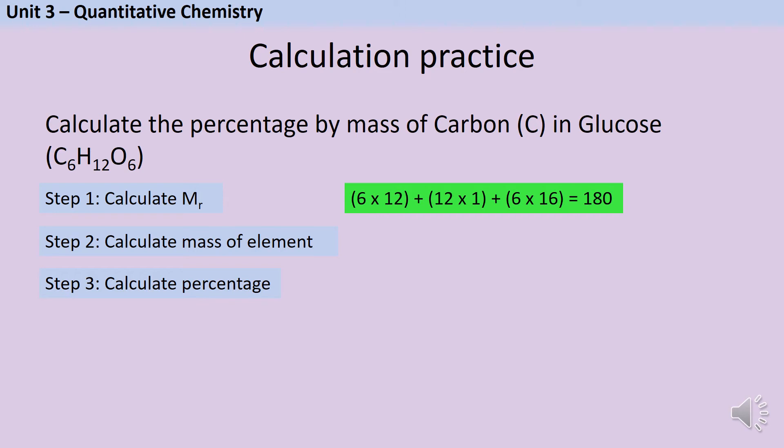My second step is just to look at the carbon, so just that six times 12 which is 72, and then I want to know what's 72 out of 180 as a percentage and it turns out it's 40 percent. Glucose is 40 percent carbon by mass.